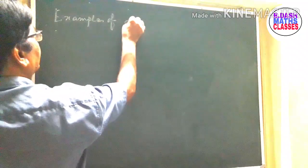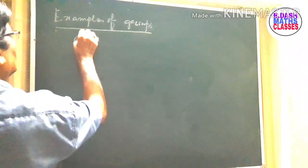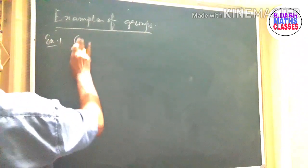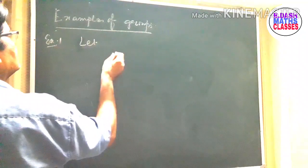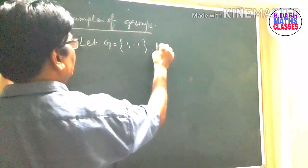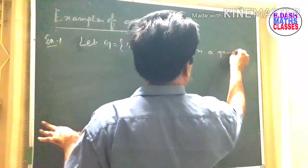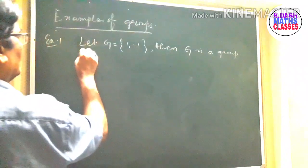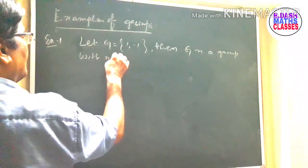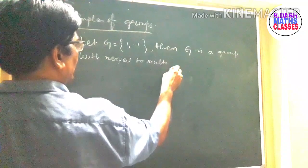Now examples of groups. Example 1: Let G = {1, -1}. Then G is a group with respect to multiplication.